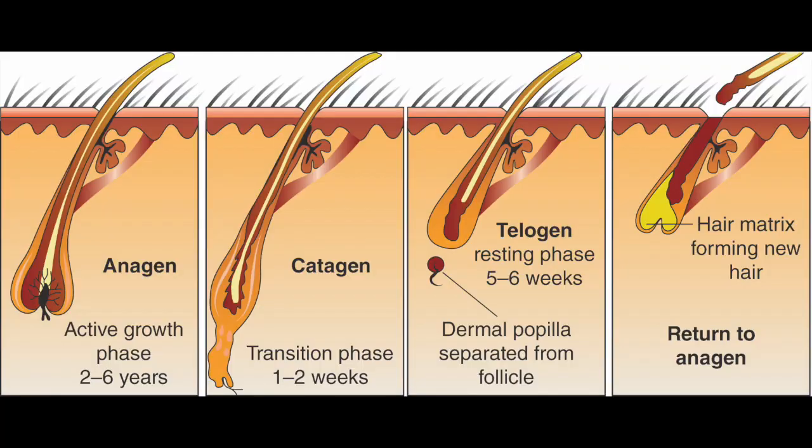First we need to understand the different phases of the hair cycle. All the hair on your scalp are not growing altogether — there are different phases a hair goes through: the anagen phase, which is the growing phase; the catagen phase, which is the phase of resorption; and the telogen phase, which is the resting phase. At the end of the telogen phase there is shedding of hair. About 90% of hair follicles are in the growing or anagen phase.